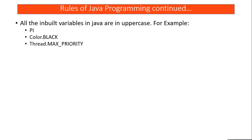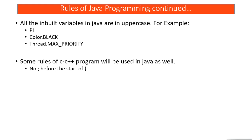All inbuilt variables in Java will be in uppercase. For example, the value of PI is written as PI in all caps. Similarly, Color.BLACK — BLACK is an inbuilt variable so it will be in uppercase. MAX_PRIORITY and MIN_PRIORITY will also be in uppercase. So inbuilt variables are written fully in uppercase.